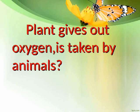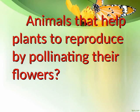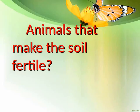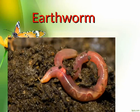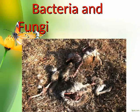Plants give out oxygen — is it taken by animals? Yes. Animals give out carbon dioxide — is it taken by plants? Yes. Animals that help plants to reproduce by pollinating their flowers? Butterfly and honeybees. Animals that make the soil fertile? Earthworm. What helps to decay dead animals? Bacteria and fungi.